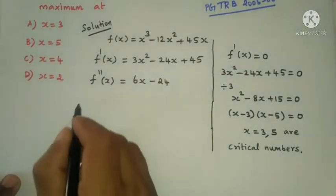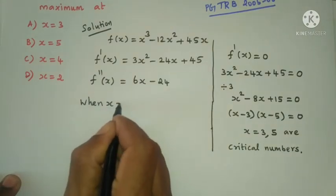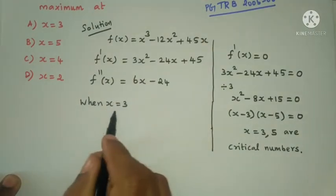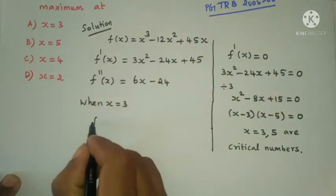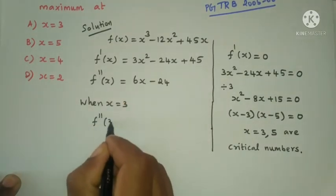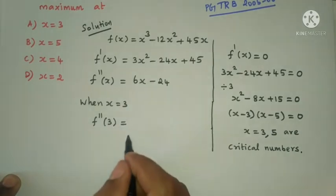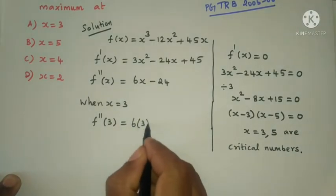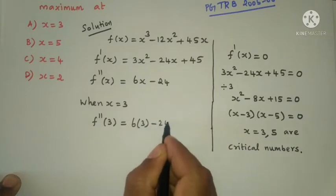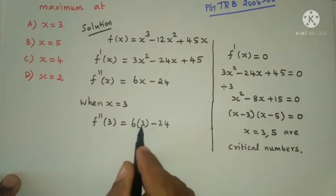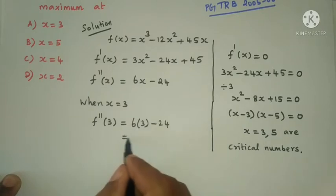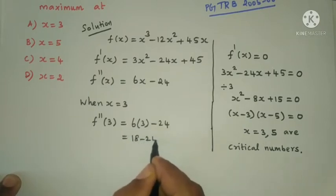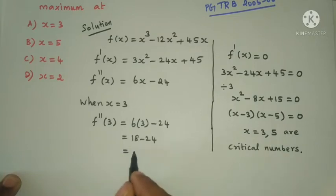Substituting x equals 3 into f''(x): f''(3) equals 6 times 3 minus 24, which equals 18 minus 24 equals minus 6, which is negative.